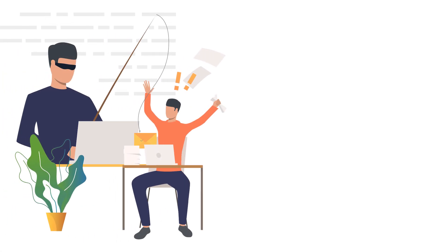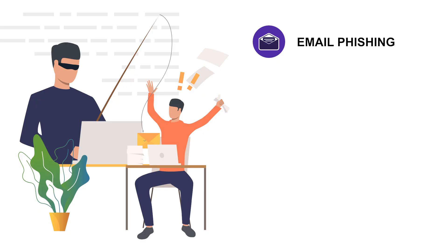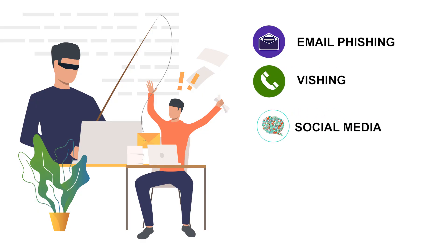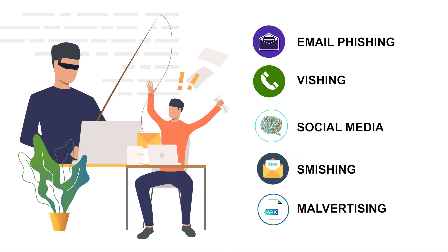Usually carried out over email, although the scam has now spread beyond suspicious emails to phone calls, so-called vishing, social media, messaging services — aka smishing — and apps. A basic phishing attack attempts to trick the target into doing what the scammer wants.